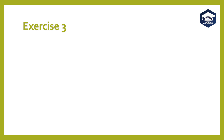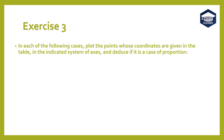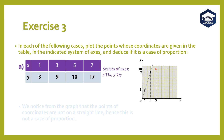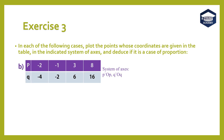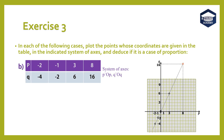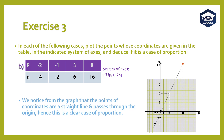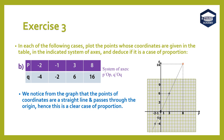Exercise 3. In each of the following cases, plot the points whose coordinates are given in the table in the indicated system of axes, and deduce if it is a case of proportion. Part A: We notice from the graph that the points of coordinates are not on a straight line. Hence this is not a case of proportion. Part B: We notice from the graph that the points of coordinates form a straight line and pass through the origin. Hence this is a clear case of proportion.